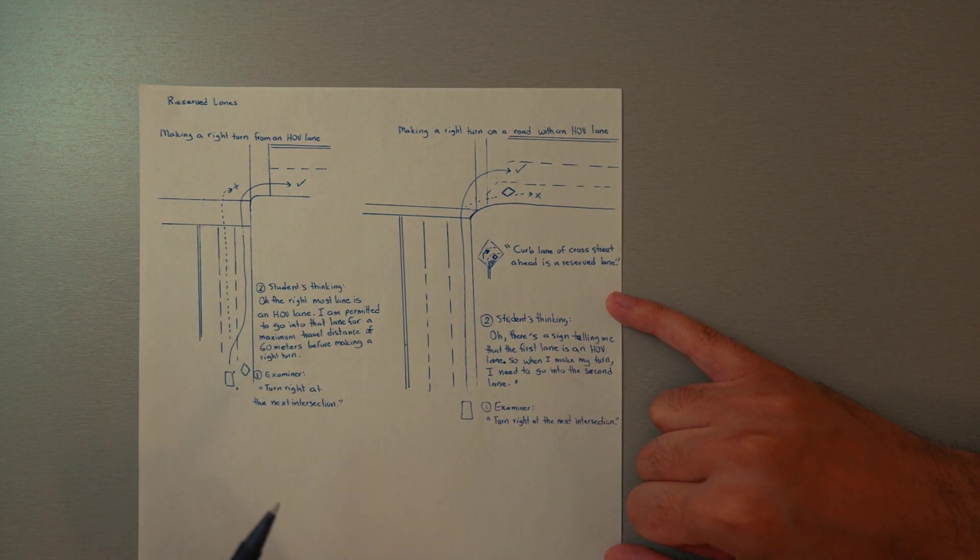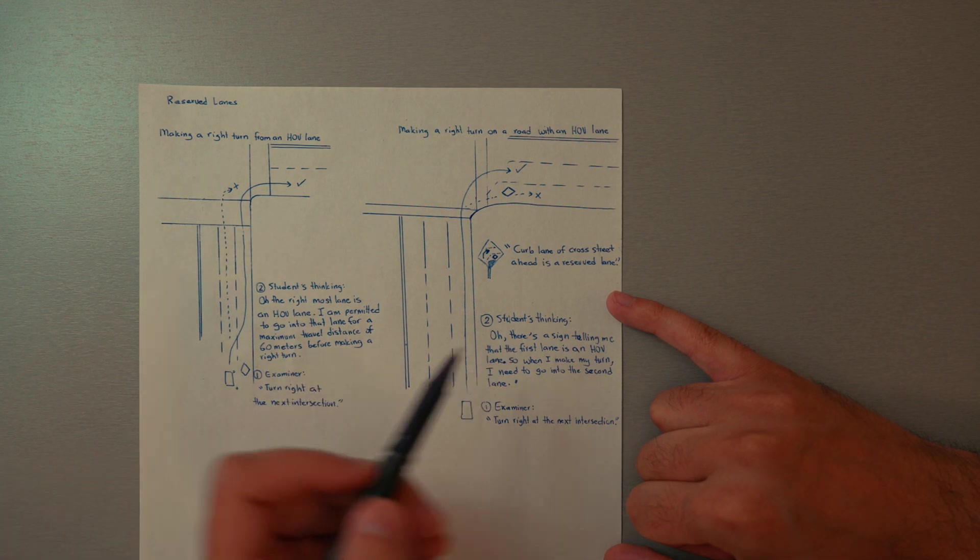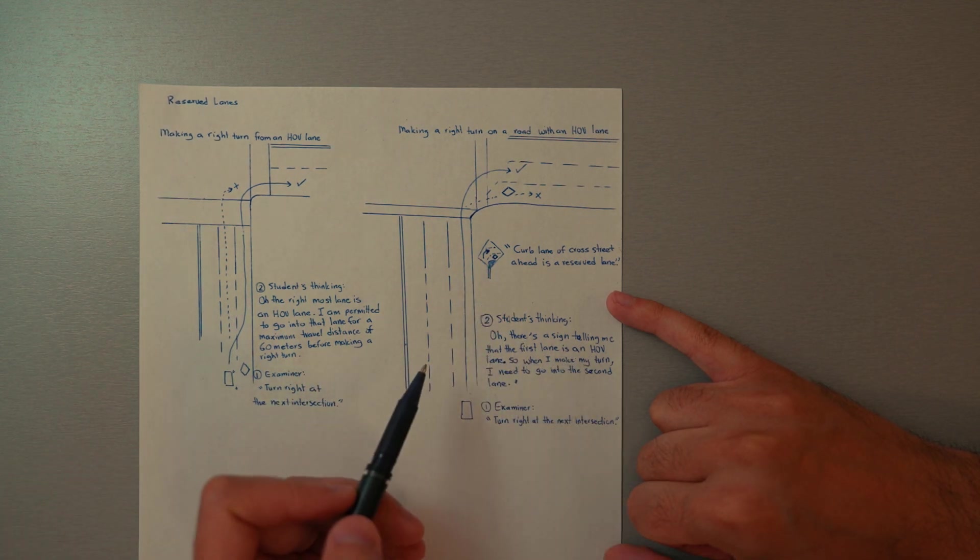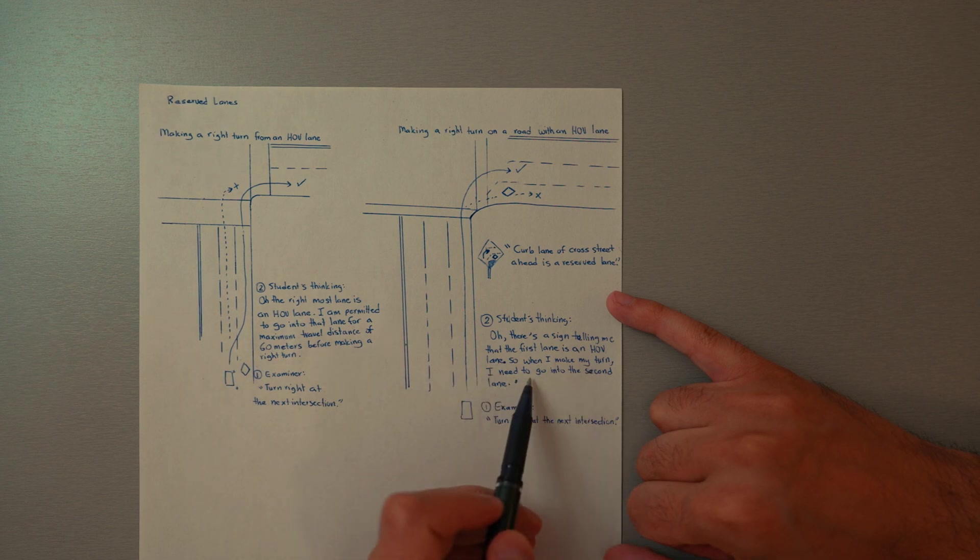I say turn right at the next intersection and the student should be thinking, oh yeah, there's a sign telling me that the first lane is an HOV lane, so when I make my turn I need to go into the second lane.